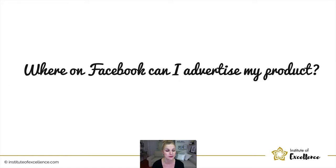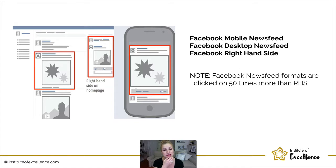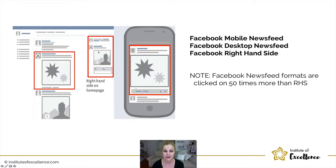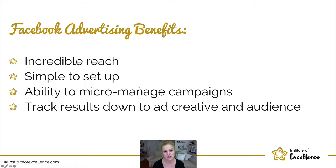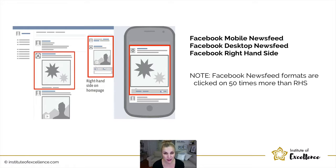Where on Facebook can you advertise your product? You can advertise on the desktop newsfeed, on the timeline of your audience, on the right-hand side of the Facebook homepage, and most popularly and most revenue-generating for Facebook — on the mobile newsfeed.